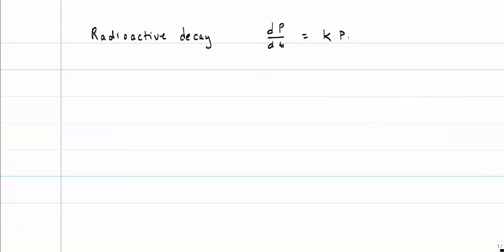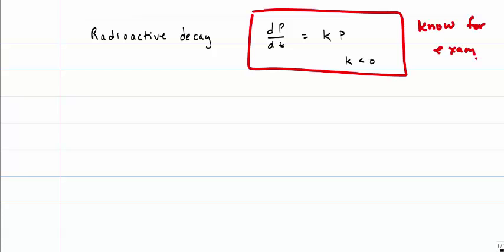The next equation that I want you to know is radioactive decay. That is, the change of population over time is equal to k times p, which looks exactly like our population dynamics. Well, it turns out the only thing that's different between this equation and the previous differential equation we had is in this case, k is going to be negative, in which case that's a decreasing population. This is like our M&M case, where people were taking M&Ms every hour. And again, I would like you to know that for the exam.